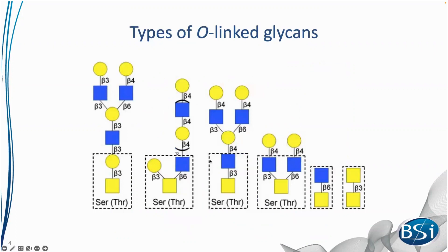In contrast to N-linked glycans, O-linked glycans are attached to serine and threonine residues and can contain more than one core structure, which can be elongated either by beta-linked galactose or glucosamine monomers.